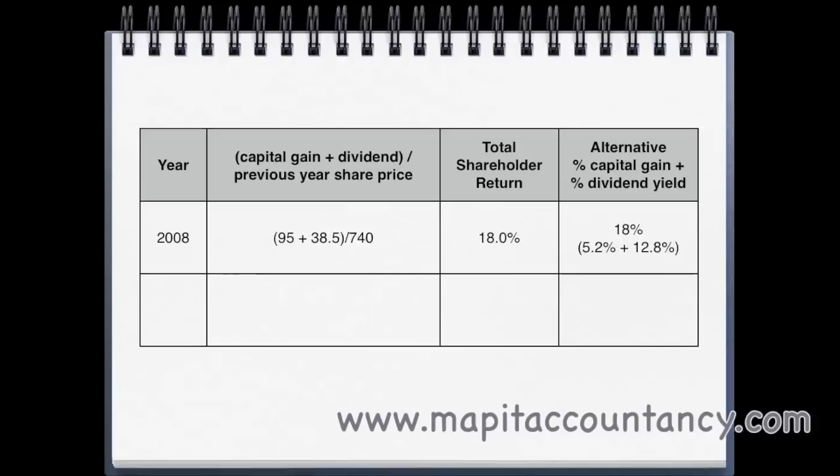For 2009: the share price dropped by 187 cents, but we had a dividend of 40 cents. So the total is a loss of 147 cents over 835 cents, giving a decrease in shareholder return of minus 17.6%. That corresponds to the 4.8% dividend yield less the 22.4% capital loss, which gives that shareholder return of minus 17.6%.